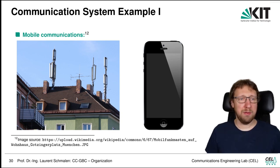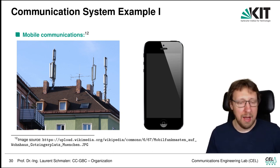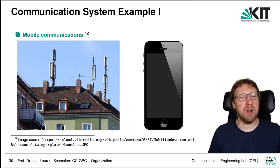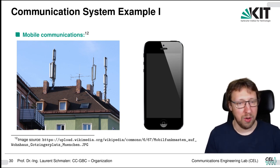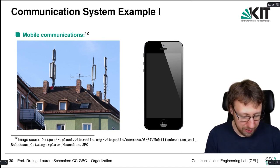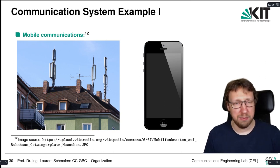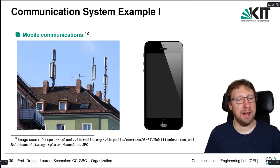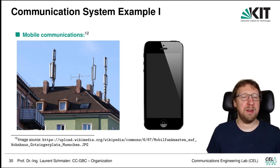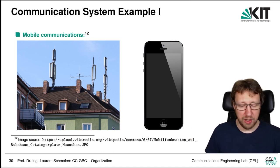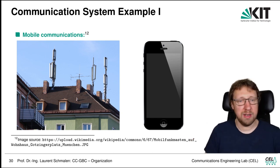Some examples of communication systems: you all know mobile communications. Everybody has a phone, and there is an infrastructure of antennas serving the phones. What you don't see are many processing units in the building or basement that process data coming from antennas, which are then fed to a network. We have a very big mobile communication infrastructure that is ubiquitous everywhere around us.